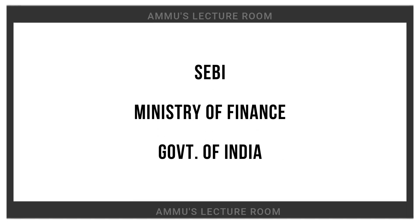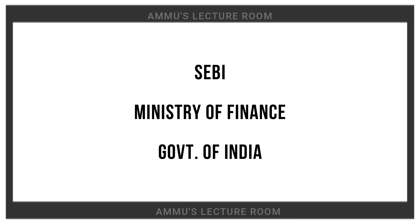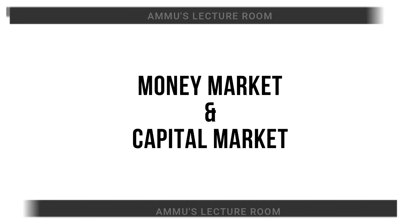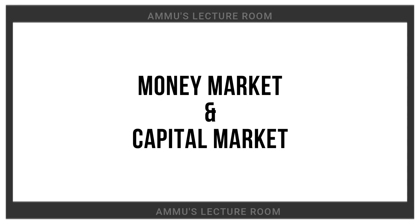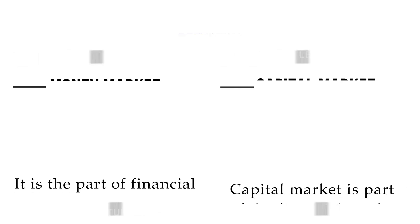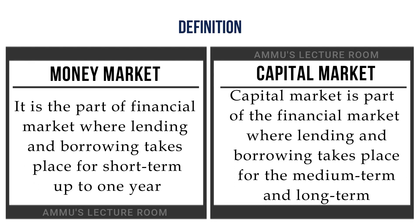Option B is Ministry of Finance, and Option D is Government of India. This is regulated by the Indian Capital Market. Money Market and Capital Market — Money Market is a comparison of short-term lending and borrowing.